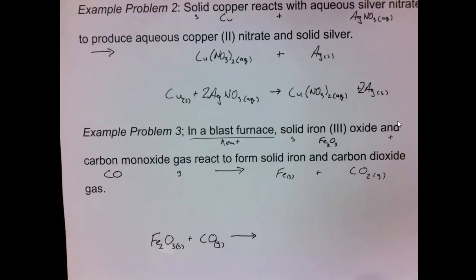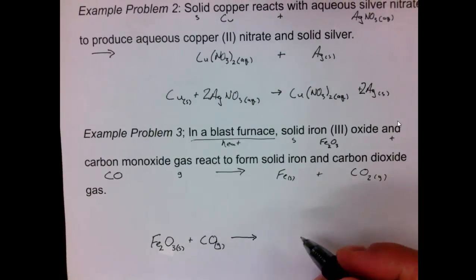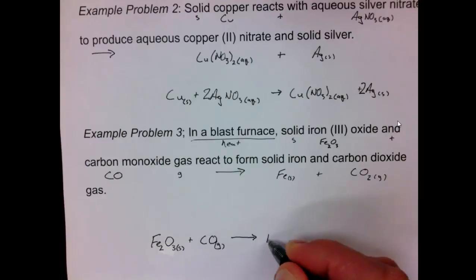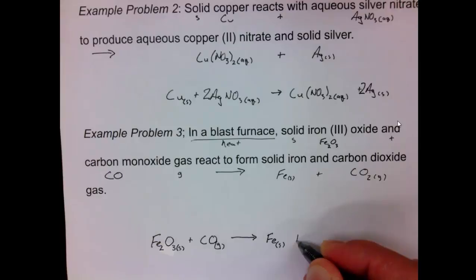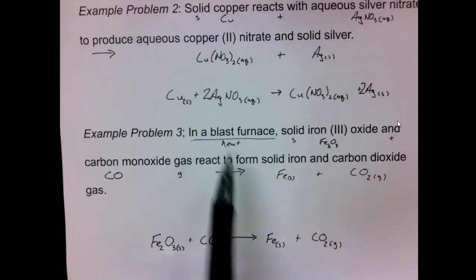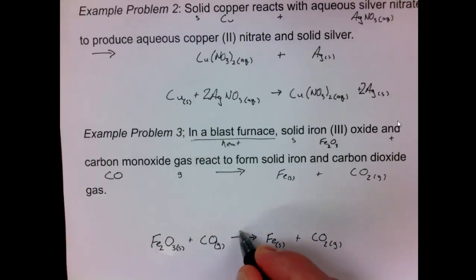Fe2O3 which is a solid plus carbon monoxide gas which is G for gas react to form so there's my arrow and then it says solid iron and also carbon dioxide gas. Because it says in a blast furnace that means that this is going to run with heat which we can use an arrow or excuse me a triangle that represents heat.